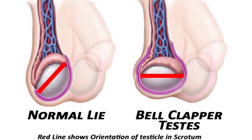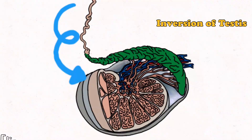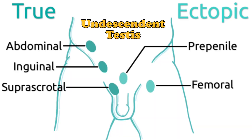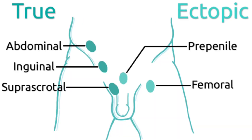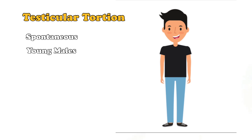The second risk factor is inversion of the testes, which may cause torsion. The third risk factor is undescended testes, and the fourth is torsion of the cyst of Morgagni. Testicular torsion is usually spontaneous in nature and is seen in young males, from birth to the pubertal age group.